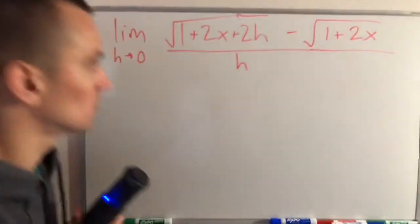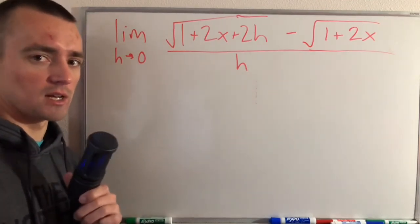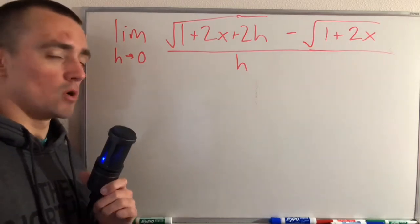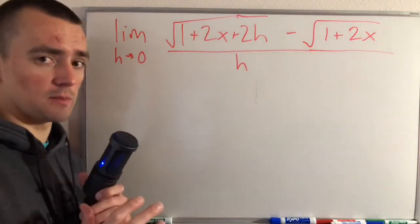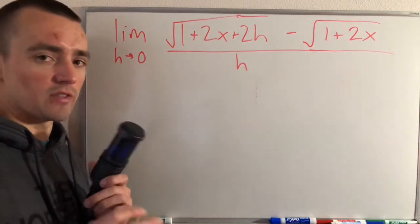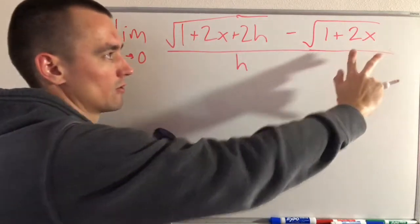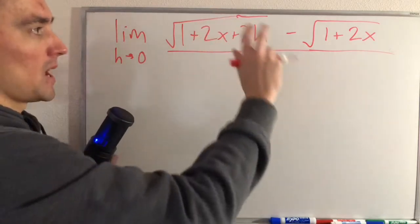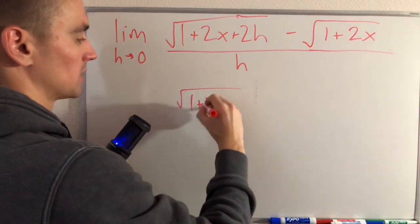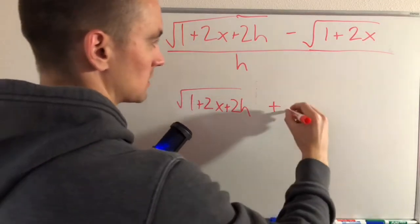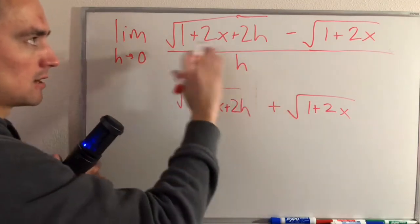The general pattern, as discussed in The Calculus Lifesaver by Adrian Banner — which is a really good book, there's a link in the description — is to multiply the top and the bottom of this fraction by the conjugate of what's on your numerator. This is a good trick whenever you're finding the derivative of a function with a square root using the limit definition, because you'll always end up with one square root minus another. The conjugate is the square root of 1 plus 2x plus 2h plus the square root of 1 plus 2x — basically just changing the minus sign to a plus.